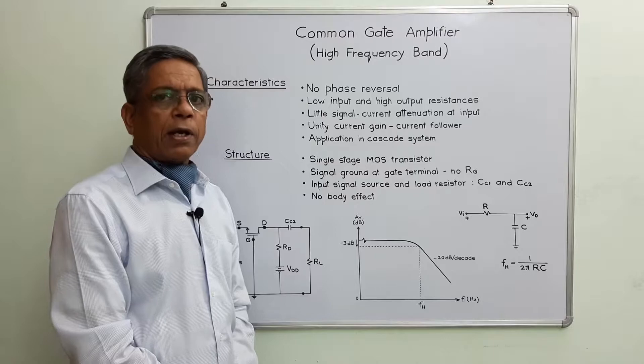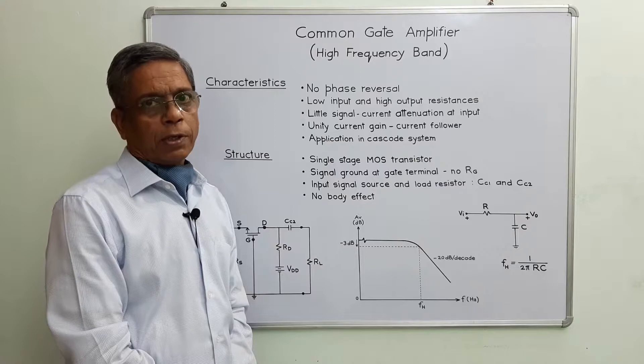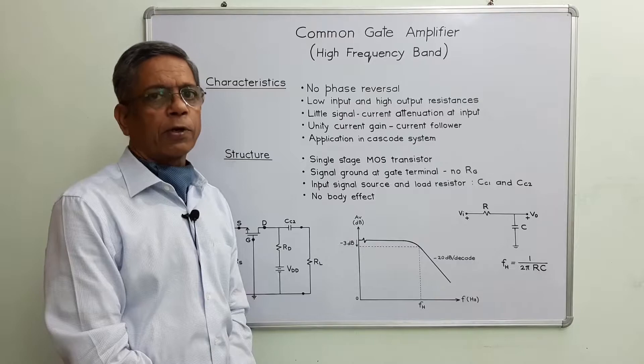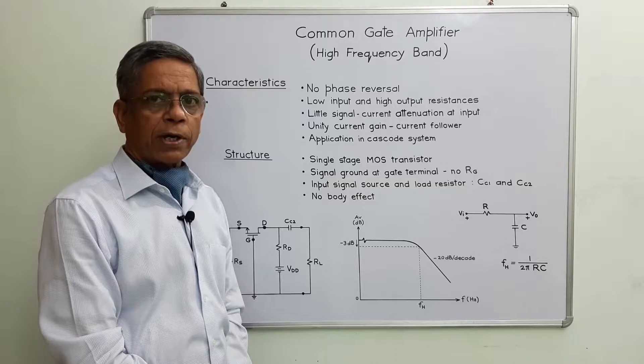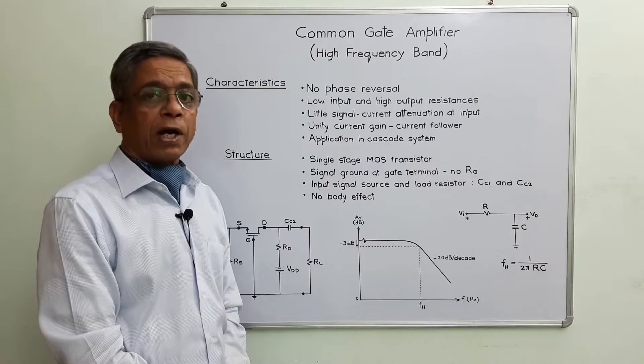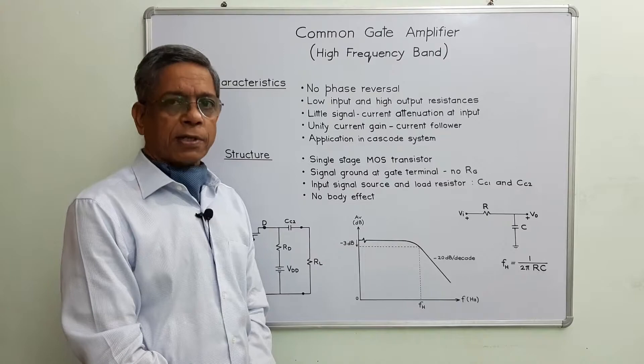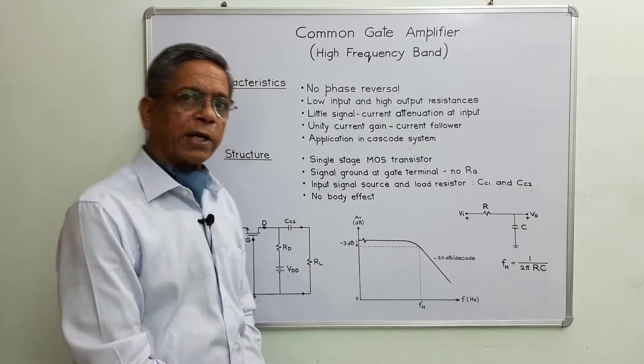This lecture is all about common gate amplifier working at high frequency band. I'll explain the performance of common gate amplifier at high frequency band and also explain the derivation of the expression for upper 3dB frequency for common gate amplifier. I refer to my earlier lecture number 12 for the derivation of voltage gain at mid frequency band and lecture number 13 for the high frequency small signal equivalent circuit for MOSFET amplifiers.